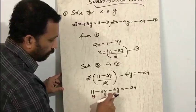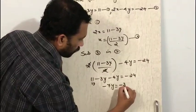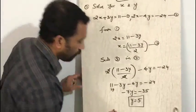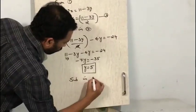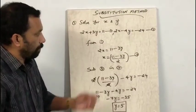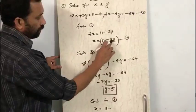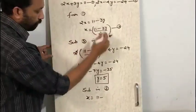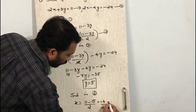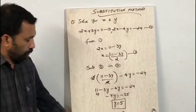The 2 cancels, leaving 11 minus 3y minus 4y equals minus 24. Transposing 11: minus 7y equals minus 24 minus 11, which is minus 35, so y is equal to 5. Substituting back into equation 3: x equals 11 minus 3 times 5, that is 11 minus 15 upon 2, which equals minus 4 upon 2, so x is equal to minus 2. Therefore x equals minus 2 and y equals 5 is the solution.